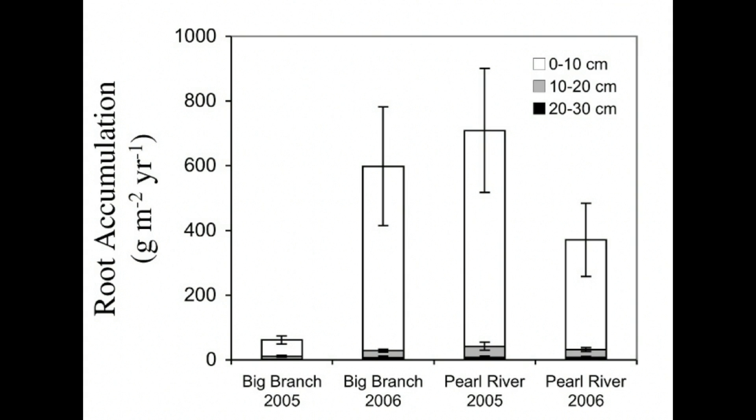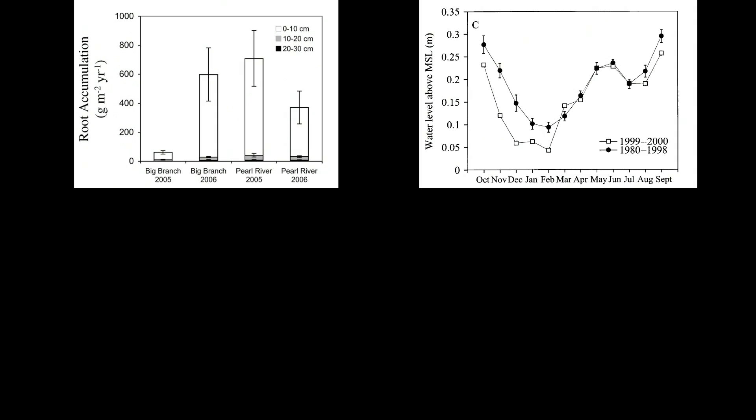In this graph, called a stack graph, the reader can see the mass of roots that accumulated at two marshes in 2005 and 2006 by depth interval. Most roots were produced in the upper 10 centimeters at both sites and dates. At Big Branch Marsh, root accumulation increased from one year to the next while it decreased at Pearl River. Other types of graphs are line graphs, scatter plots, and box plots.